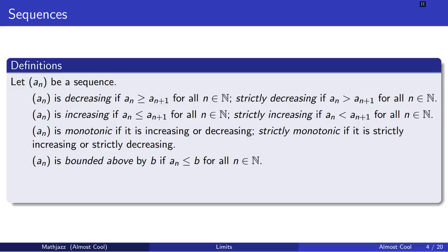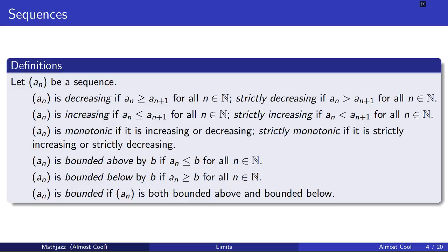Another property is boundedness. A sequence is bounded above by some number b if b is greater than or equal to every element in the sequence. Likewise, a sequence is bounded below by a number b if b is less than or equal to every number in the sequence. If a sequence is both bounded above and below, it's called a bounded sequence.